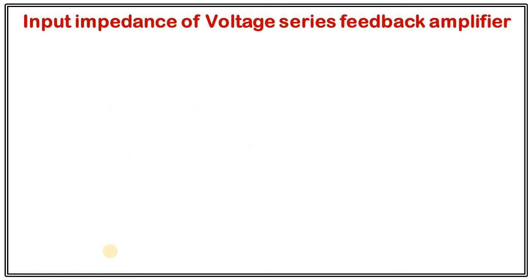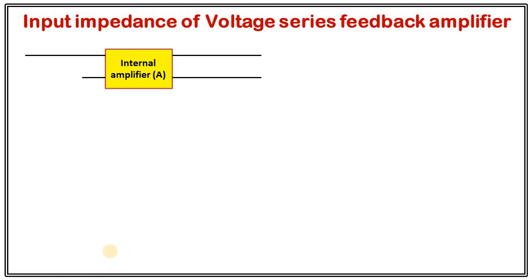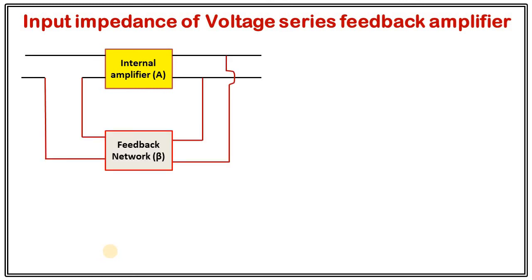Now moving on to the second topic: input impedance. As I mentioned, input impedance can be changed using different kinds of feedback amplifier topologies and suitable networks. Here I am going to find out the input impedance of the voltage series feedback amplifier. I have discussed about the voltage series feedback amplifier previously, so let's first draw it and recapitulate. The internal amplifier has the feedback network connected in shunt configuration at the output and in series configuration at the input.